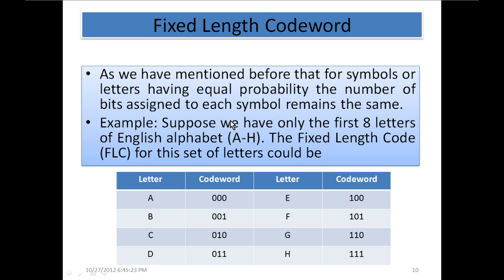For example, suppose we have only the first eight letters of English alphabet A to H. The fixed length code for this set of letters could be a truth table of three bits: 000 is assigned to A, 001 to B, 010 to C, 011 to D, 100 to E, 101 to F, 110 to G and 111 to H.